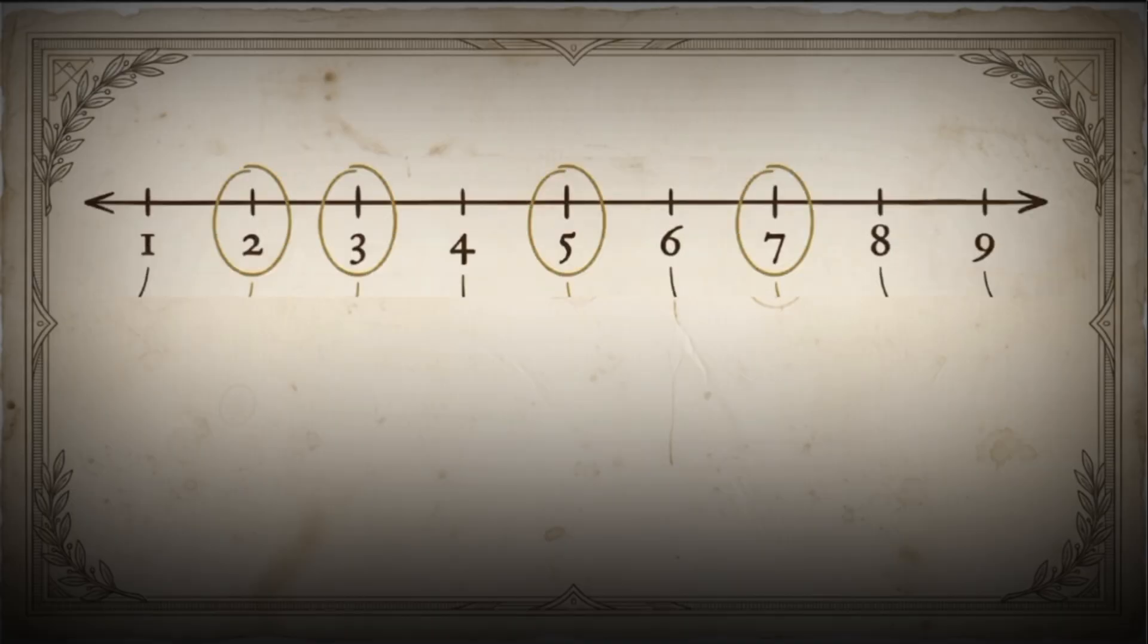If we line up the natural numbers and take the square root of each number, something fascinating happens. The square roots of all prime numbers become irrational numbers.